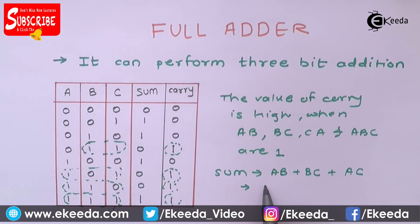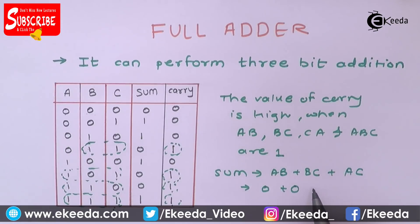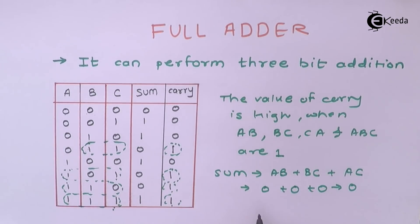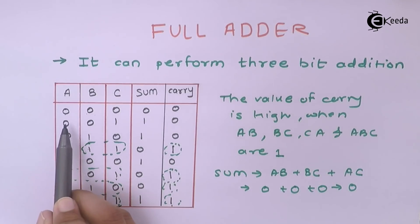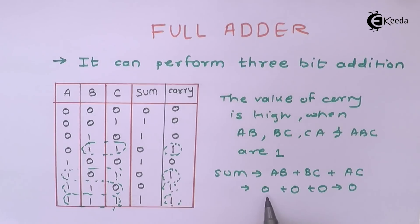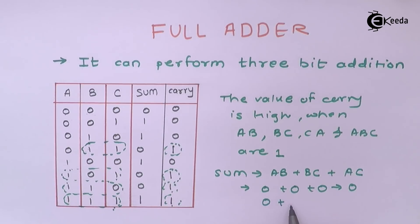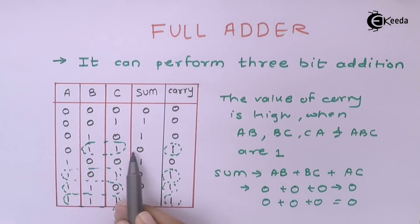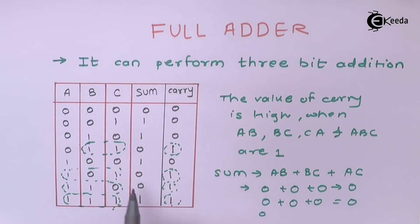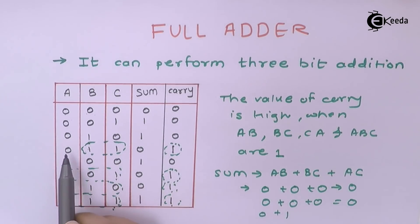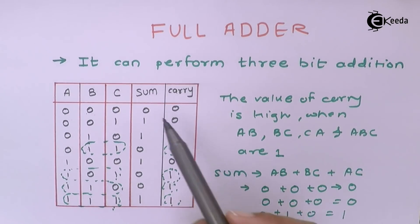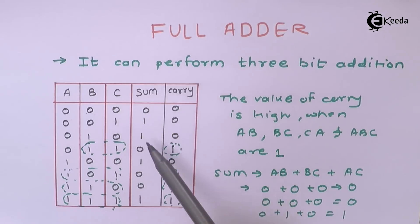For condition A=0, B=0, C=0: A·B = 0×0 = 0, B·C = 0×0 = 0, A·C = 0×0 = 0, giving sum = 0. For condition A=0, B=0, C=1: A·B = 0×0 = 0, B·C = 0×1 = 0, A·C = 0×1 = 0, so sum output is 1. For condition A=0, B=1, C=1: A·B = 0×1 = 0, B·C = 1×1 = 1, A·C = 0×1 = 0, giving result 1.